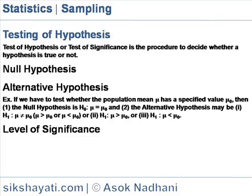Null Hypothesis. Test of Hypothesis is always started with an assumption of the Null Hypothesis. The Null Hypothesis asserts that there is no significant difference between the statistic and population parameter. The observed difference is mainly due to chance, that is fluctuations in sampling from the same population. The Null Hypothesis is usually denoted by symbol H0. The no-difference attitude on the part of the statistician before drawing any sample is the basis of the Null Hypothesis.